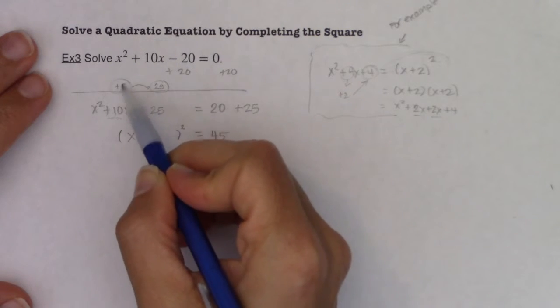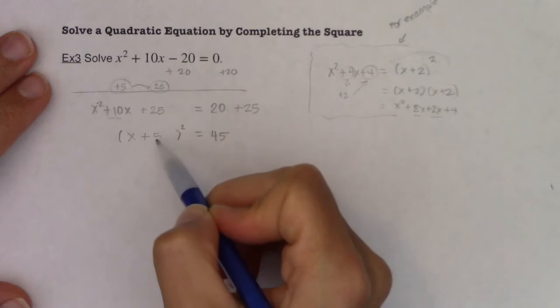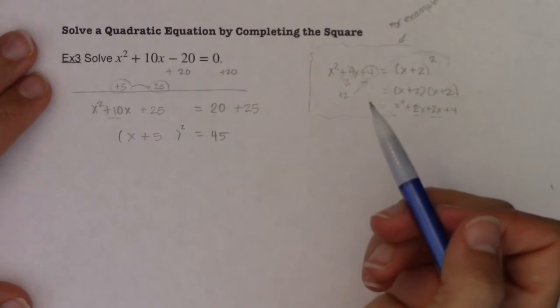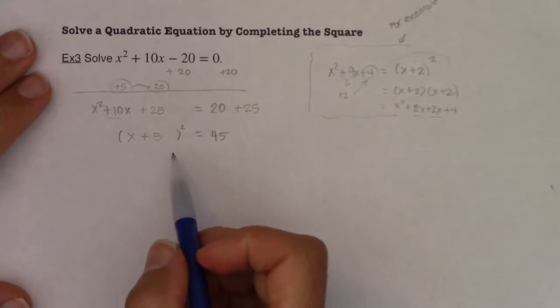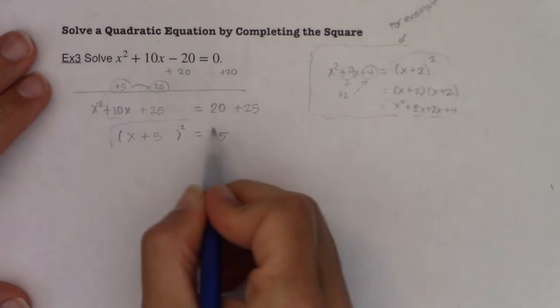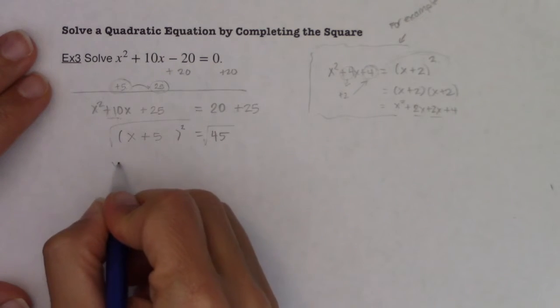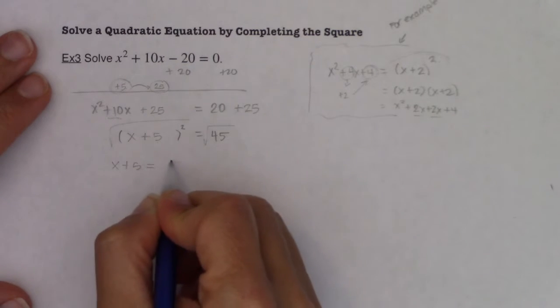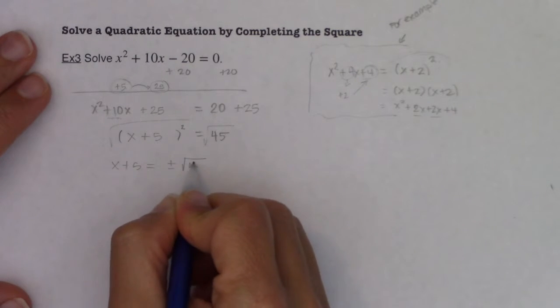Ultimately, half of that linear term, half of positive 10 was positive 5. That's what I drop here, okay? So with that being said, now you can apply the square root property, right? I can square root both sides, and I know x plus 5 will equal either the positive or negative root of square root of 45.